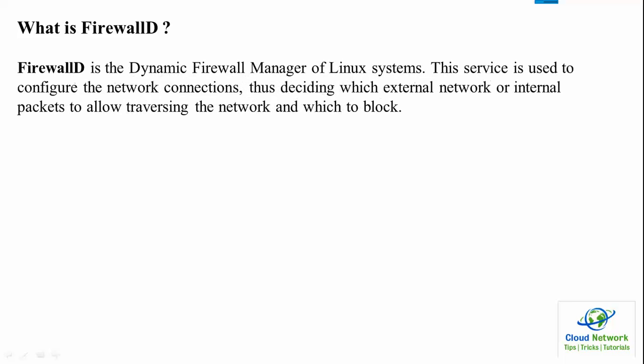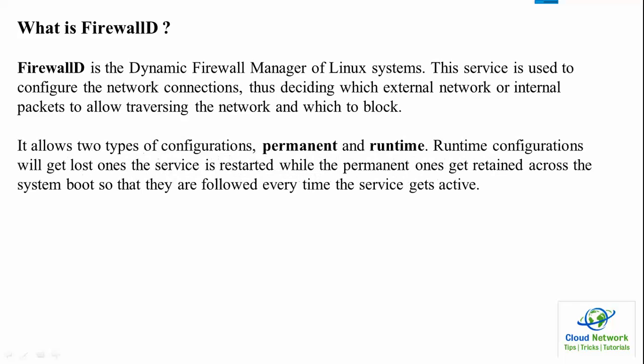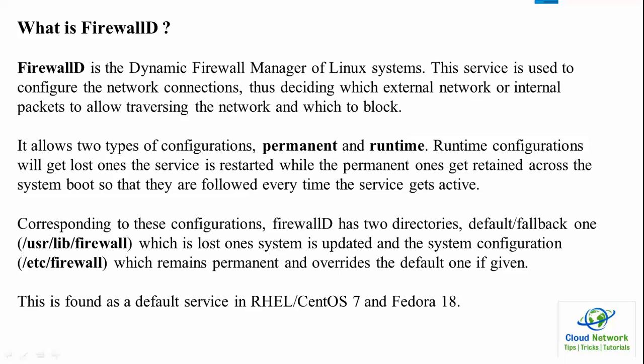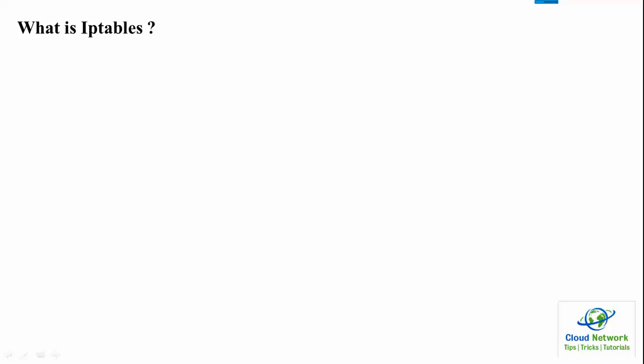First, what is FirewallD? FirewallD has two types of configuration: permanent and runtime. There is a corresponding configuration file for almost every setting, found under /etc and /usr. This service runs by default on Red Hat Linux 7, CentOS 7, and Fedora 18 and above.